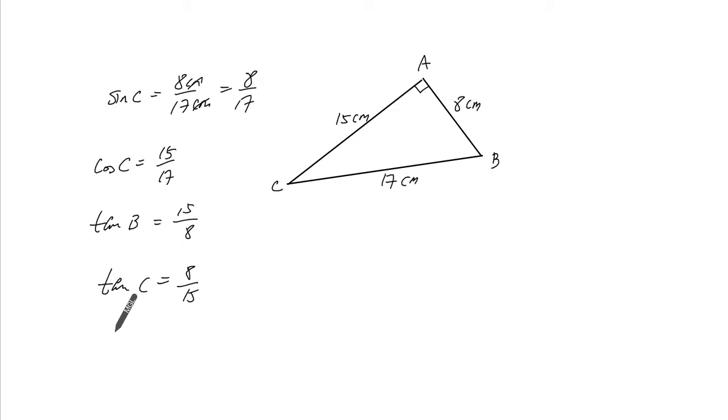Okay, and what's next? Cosine of B. Adjacent over hypotenuse, so 8 over 17.